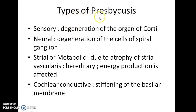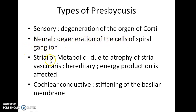What are the types of presbyacusis? Sensory presbyacusis — it is caused due to the degeneration of the organ of Corti. Neural presbyacusis — it is caused due to the degeneration of the cells of the spiral ganglia. Strial or metabolic presbyacusis — it is caused due to the atrophy of the stria vascularis.